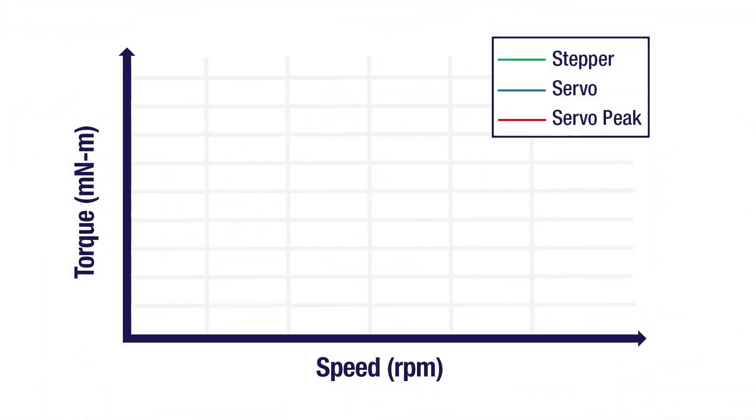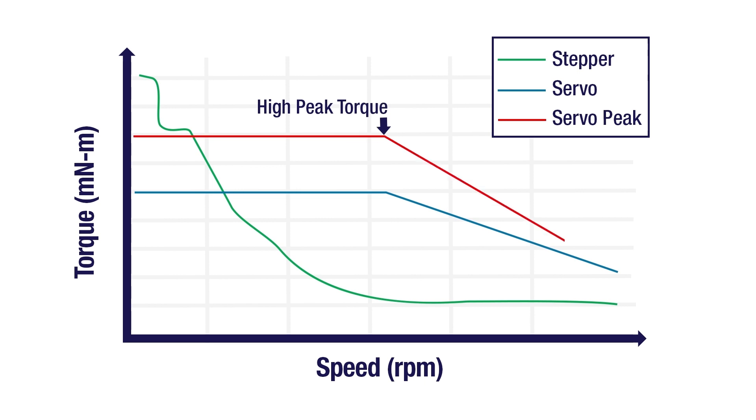Servos are better suited for higher RPM applications and provide higher torque at higher RPMs, while stepper torque falls off at increased RPMs. Servos can also provide high peak or momentary torque, often three to four times the rated torque to get loads moving and better handle dynamic loads.